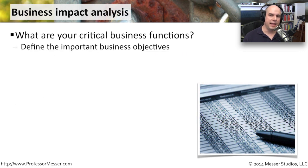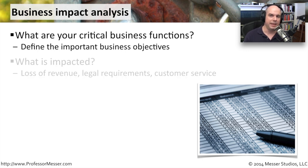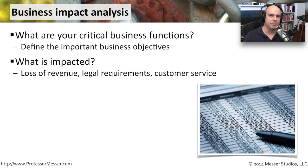To get a better handle on what that means, you should start by analyzing what would happen if certain things occur. What are the critical business functions in your environment? You need to understand what your primary business objectives are and make sure those are documented. If you're not able to produce a particular product, have people in a building, or if you happen to lose a database, you need to understand how that's going to affect the overall business.